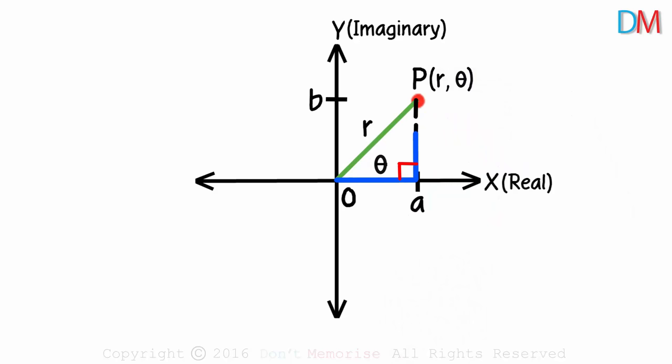If we are looking at this right triangle, this length is a, this length is b, this length is r. Angle POA is theta and this angle is 90 degrees.